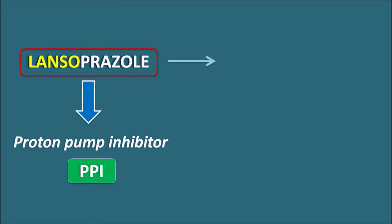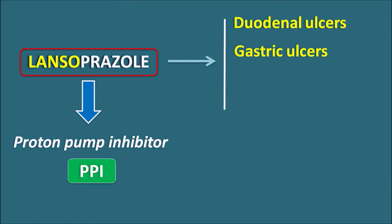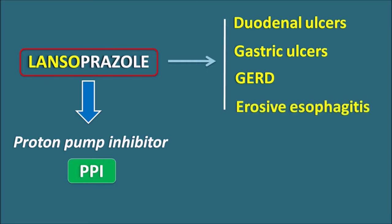This drug can be used in the treatment of duodenal ulcers, gastric ulcers, and GERD — gastroesophageal reflux disorder — where gastric acid is refluxed into the esophagus, resulting in esophageal irritation and heartburn. Lansoprazole can also be used in erosive esophagitis, which involves erosion of the mucosal layer within the esophagus causing inflammation and irritation. In such conditions, Lansoprazole is used to reduce acid reflux.